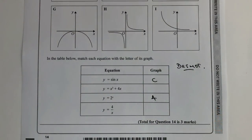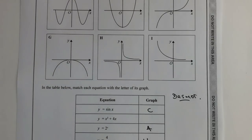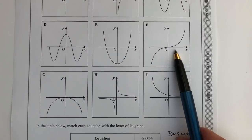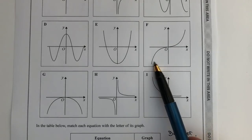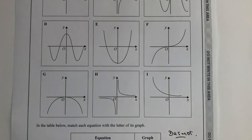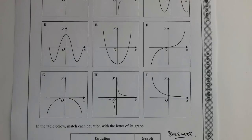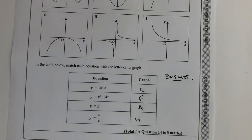y equals 4 over x is going to be graph H. The second equation, x cubed plus 4x - quite a tricky one - is actually a cubic graph, and it's graph F.